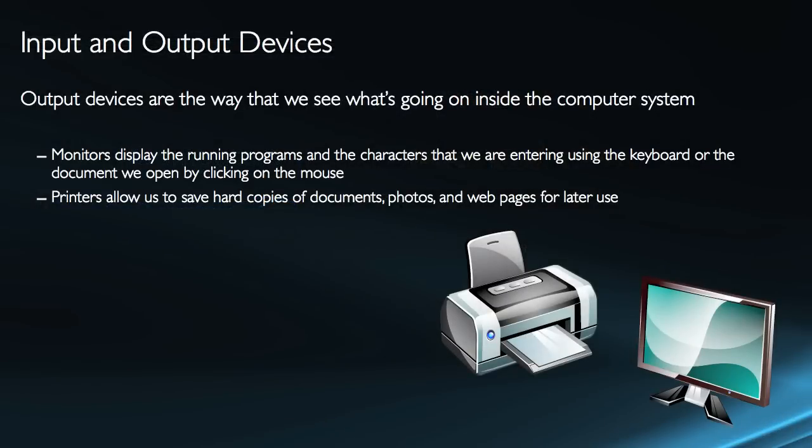Output devices, on the other hand, are the way that we can see what's going on in the computer system. There are two primary output devices. Monitors display the running programs — they display the characters we're entering using a keyboard, or the document that we open or move by clicking using the mouse. Printers are for the sole purpose of having hard copies of documents, photos, and web pages so that I can use and refer to them later.